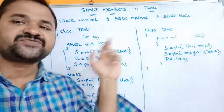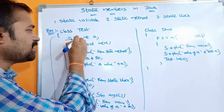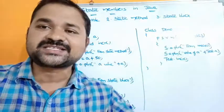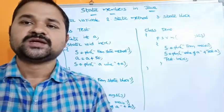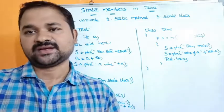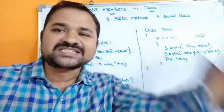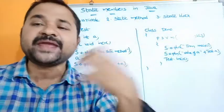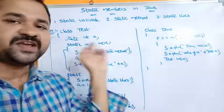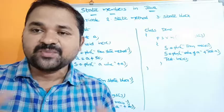For an instance variable, whenever an object is created then memory will be allocated. Whereas for the static variable, the memory will be allocated whenever a class is loaded into memory. First compilation will be done, and after that execution will be done. During execution the JVM loads that class file into the main memory.